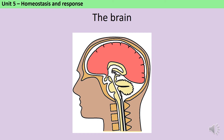There are three parts of the brain that you need to be able to name for this part of the GCSE, but elsewhere in the homeostasis and response unit there are a further two that you need to know about, so here we're going to look at all five of them.